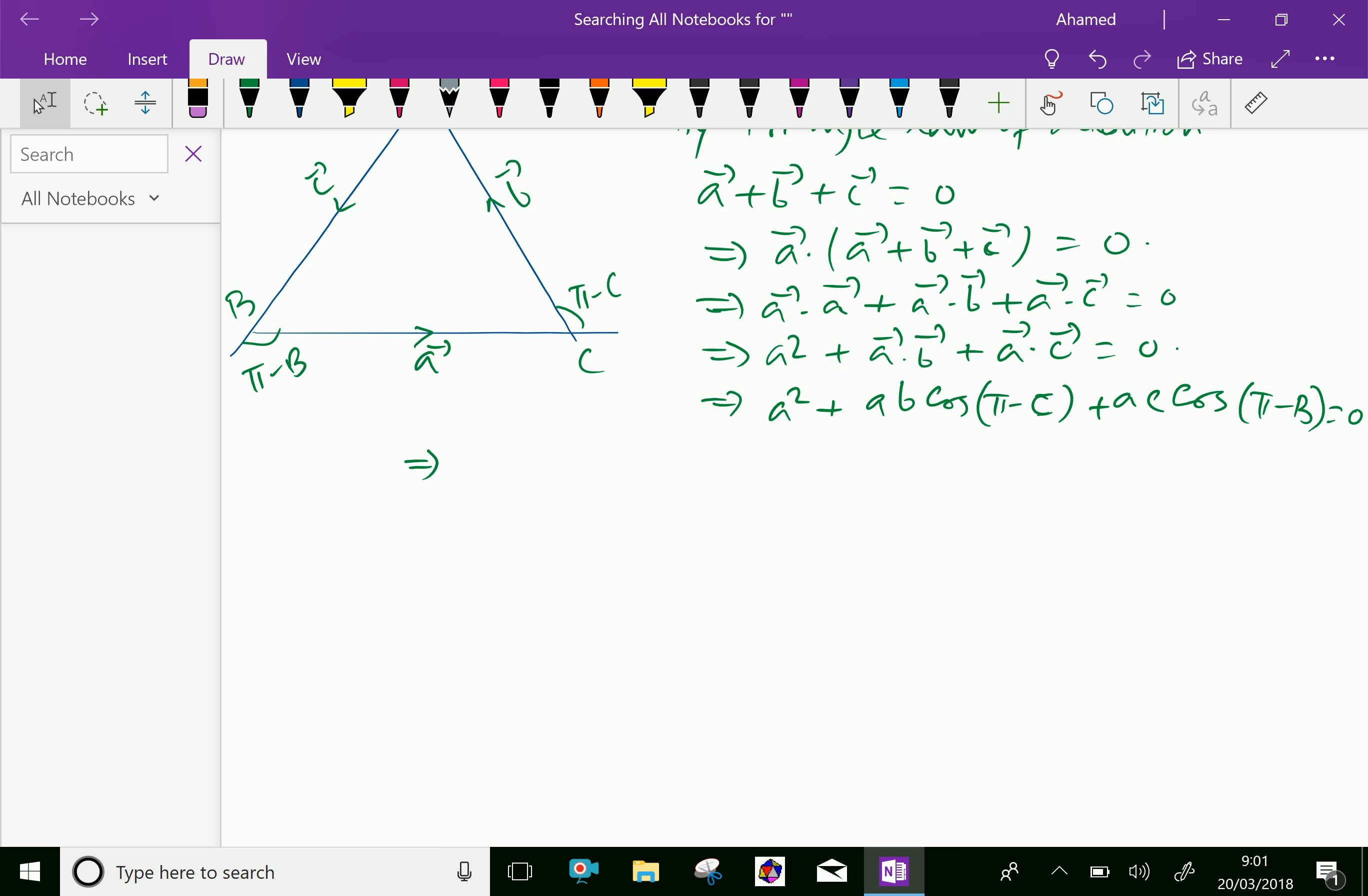Which gives a squared, here ab cos π minus c, cos π minus c is minus cos c, therefore you can write minus ab cos c minus ac cos b equals zero.